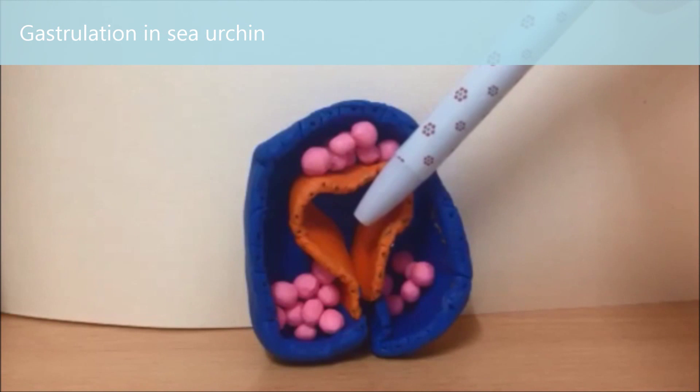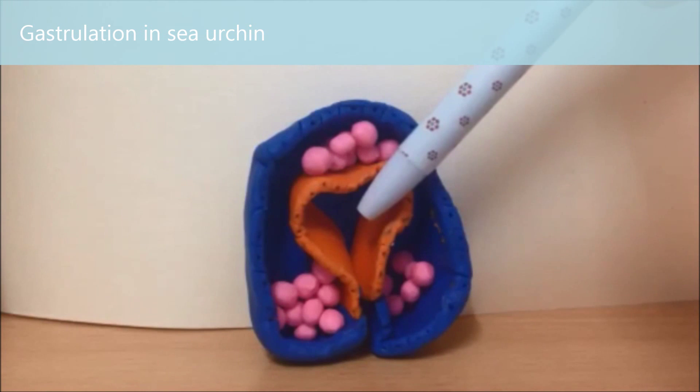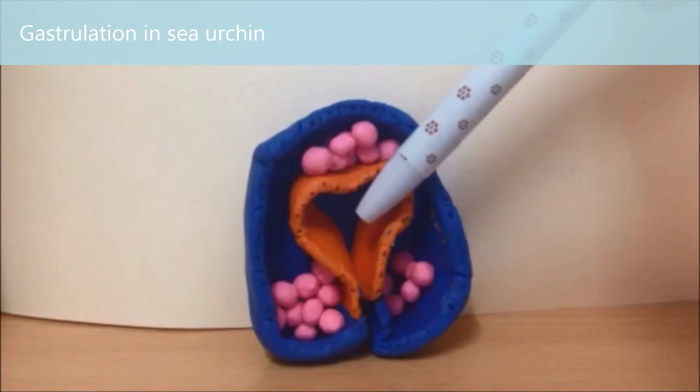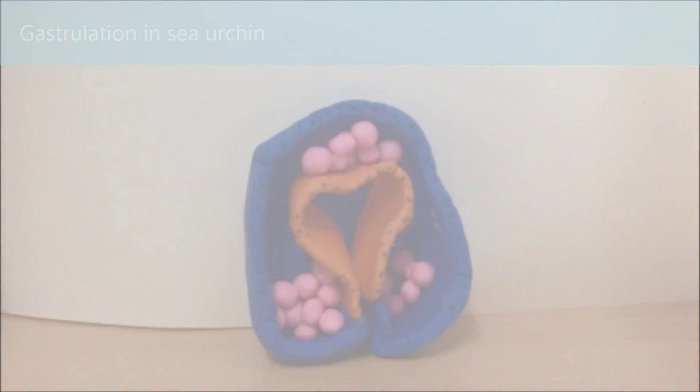This is called the Archenteron. The Archenteron is mesoderm that will develop into organelles, red blood cells, muscle cells, and vesicular cells.